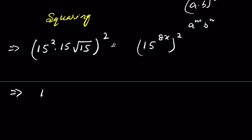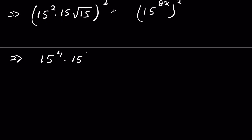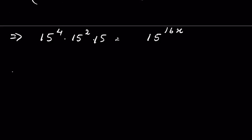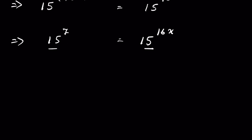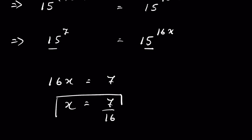Squaring both sides again: 15 to the power 2 times 15 to the power 2 and the square root, whole squared, equals 15 to the power 8x whole to the power 2. So this is 15 to the power 4, times 15 to the power 2, and squaring removes the square root, giving times 15, equal to 15 to the power 16x. Adding the exponents: 15 raised to the power 4 plus 2 plus 1 equals 15 raised to the power 16x, so 15 to the power 7 equals 15 to the power 16x. Since the bases are the same, 16x equals 7, so x equals 7 upon 16.